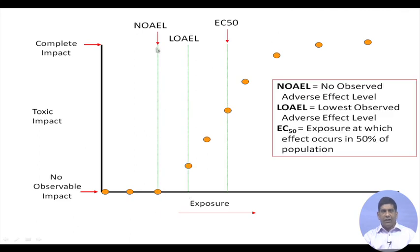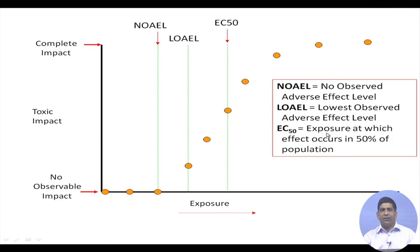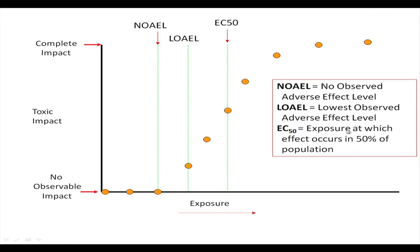The point up to which there is no observed impact is called NOAEL — No Observed Adverse Effect Level. LOAEL — Lowest Observed Adverse Effect Level — is the exposure at which you start seeing impact. EC50 is the effective concentration or exposure at which the effect occurs in 50% of the population. For example, if you run an experiment with 10 fish and see impact in 5 fish at a certain concentration, that is your EC50. At the top of the curve you have 100% impact.